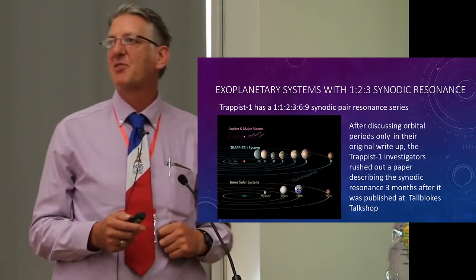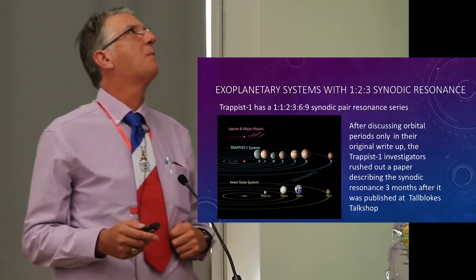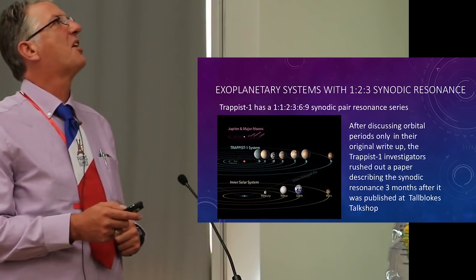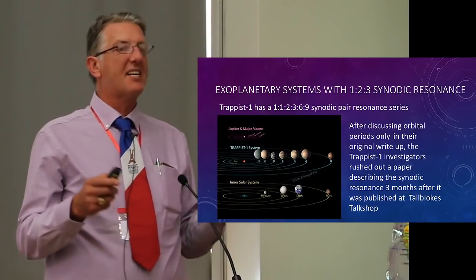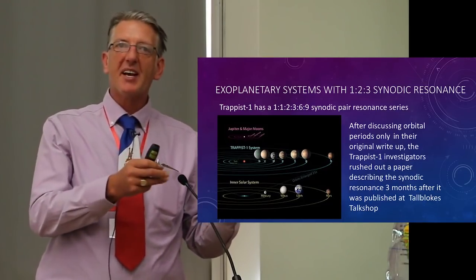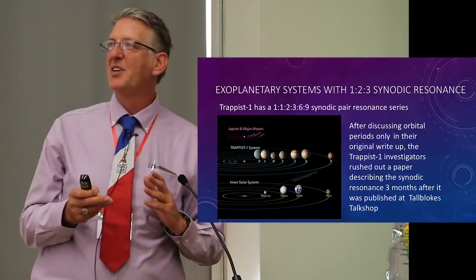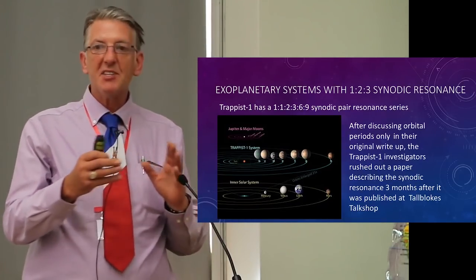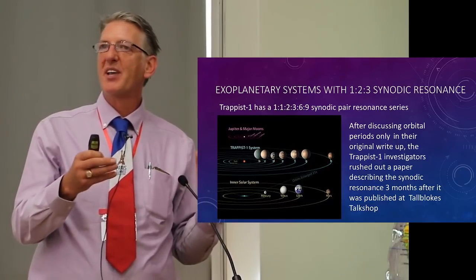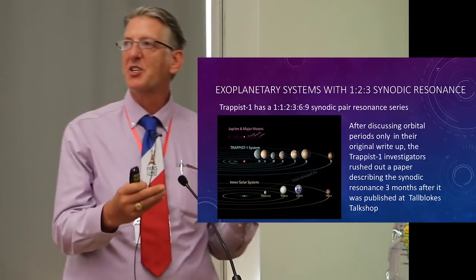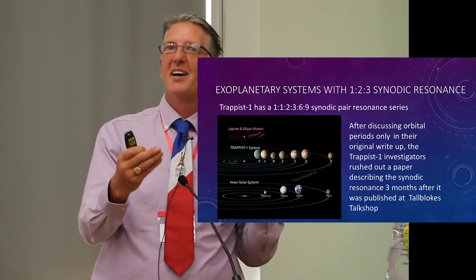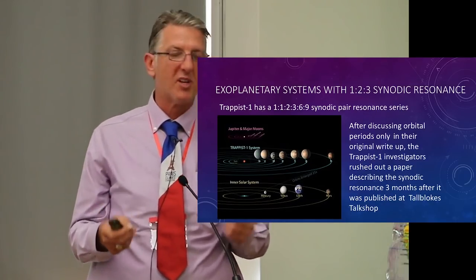And they published that three months after we put it up on our weblog at Tall Bloke's Talkshop, so they're starting to take notice of what we're telling them, which is it's actually the synodic conjunctions of these planets or moons that then sets the orbits. So the strength of the resonance is due to the conjunctions and not just a numerical relationship between orbital periods.